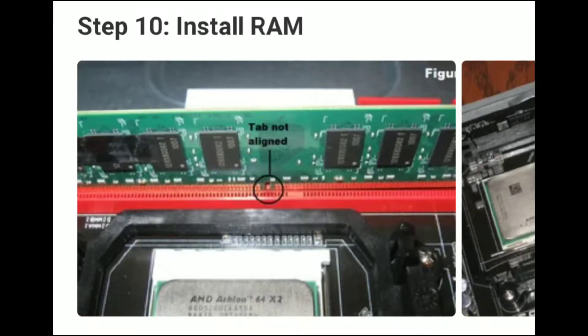Step 10: Install the RAM. Place firmly on both ends of the board to seat it in the RAM socket. Make sure the tabs lock into place. Step 11: Install the CPU fan. Hold the locking rod down on the fan assembly to lock it into place.